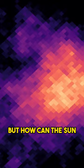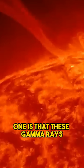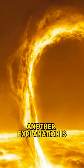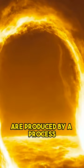But how can the sun produce such high energy gamma rays? There are two possible explanations. One is that these gamma rays are not directly produced by the sun, but by cosmic rays that interact with it. Another explanation is that these gamma rays are produced by a process called magnetic reconnection in the sun's corona.